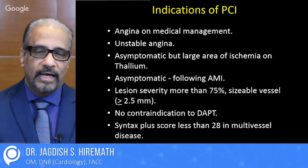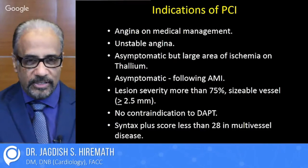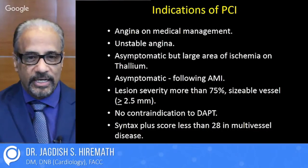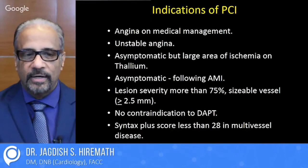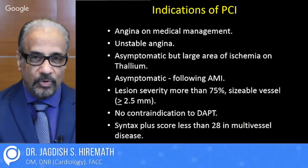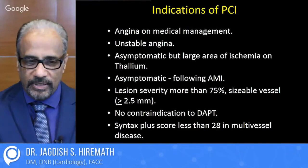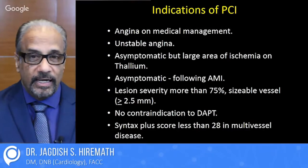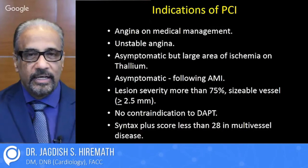By and large, the indications for PCI — percutaneous coronary interventions — are: failure of medical line of treatment, that is angina despite medical treatment; documented unstable angina; asymptomatic patient with a very proximal LAD where a large area is involved; a person who is asymptomatic maybe after a myocardial infarction with significant lesion severity. And if there is no contraindication to dual antiplatelet therapy — because the cornerstone of post-PCI management is giving dual antiplatelet therapy for at least one year — if a person has contraindications for that, then angioplasty will have to be reconsidered.